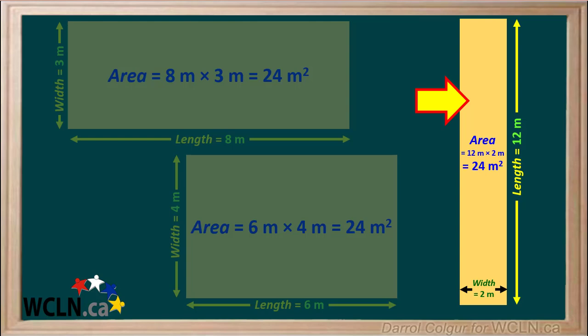Here's the third rectangle. It has a length of 12 meters and a width of 2 meters. So its area is equal to 12 meters times 2 meters, which again is 24 meters squared.